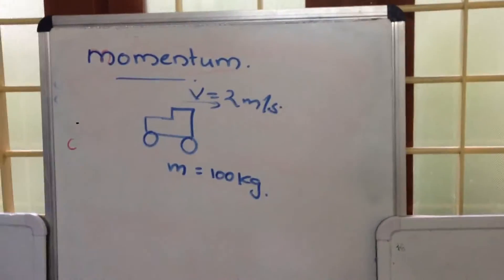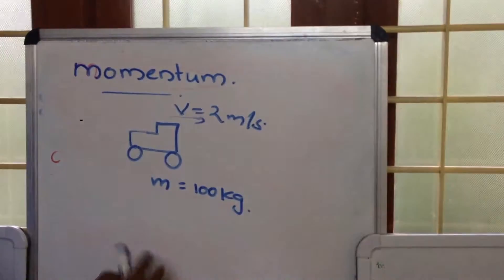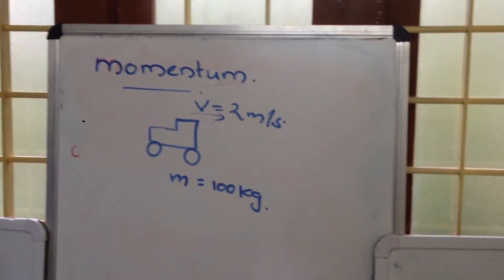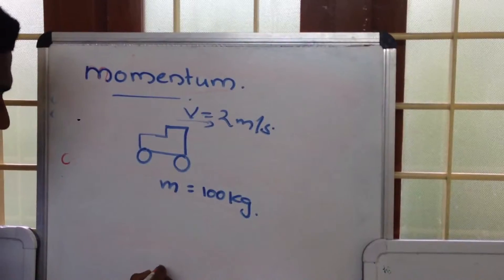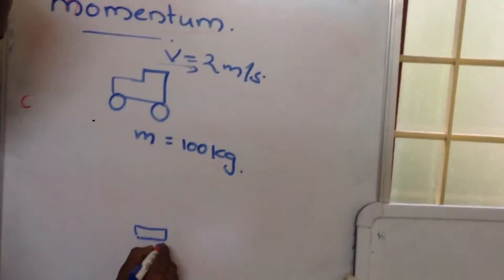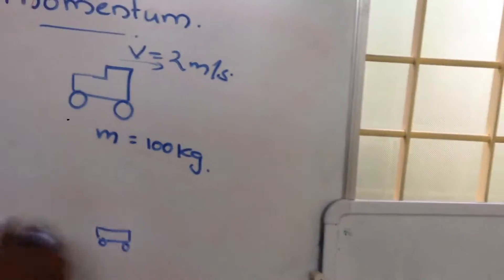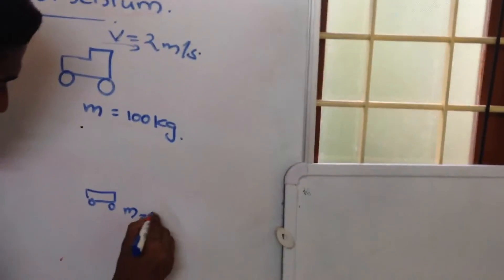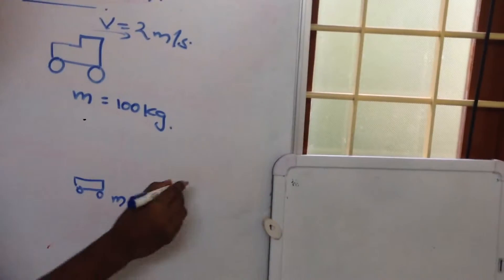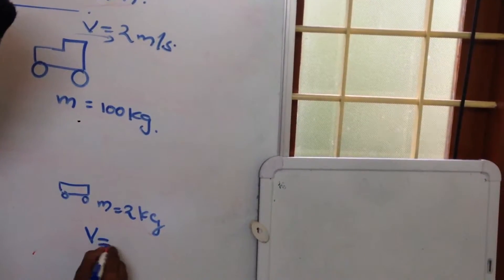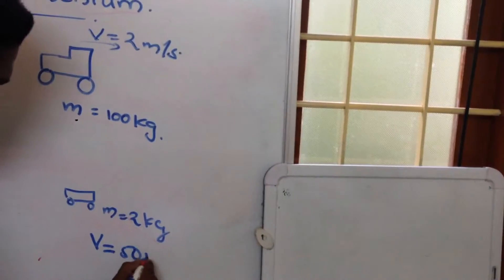Now we are having a vehicle, and we are going to consider another object — a small piece of toy whose mass is 2 kg but its velocity is 50 m per second.